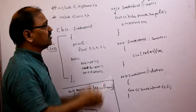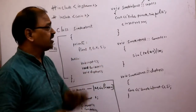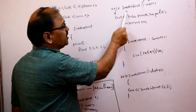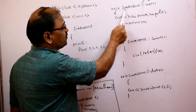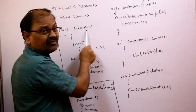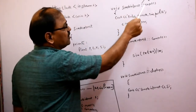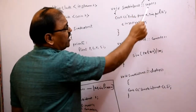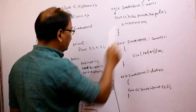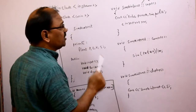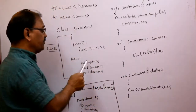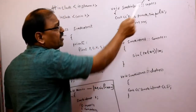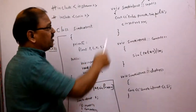We are taking the scope resolution operator because we are defining the member functions outside the class. We write 'void simple_interest::' — simple_interest is the name of the class — followed by the scope resolution operator and the member function name. We should be very careful that whatever name you have defined in public, we have to write the same name outside the class.